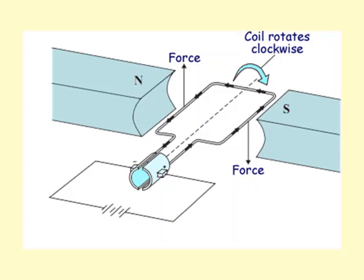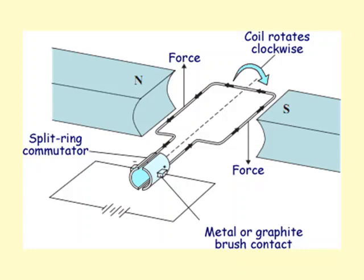To avoid this problem, we have something called the split ring commutator and the metal brushes, which are here. So what these do is every half a turn, it will switch polarity.